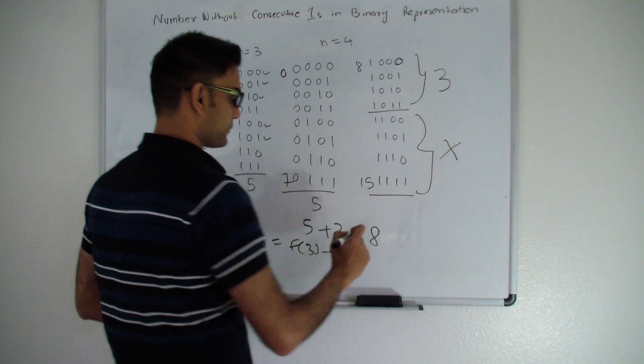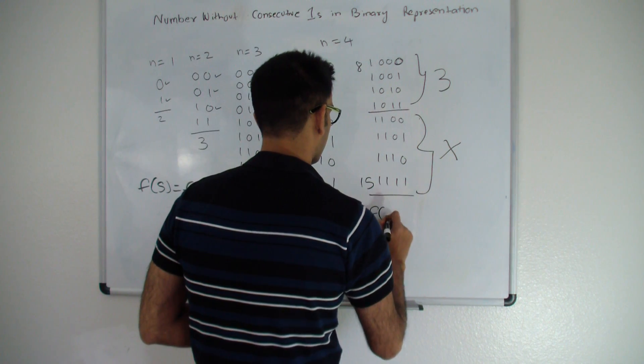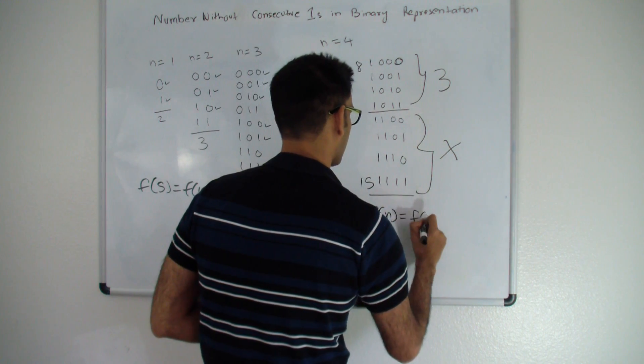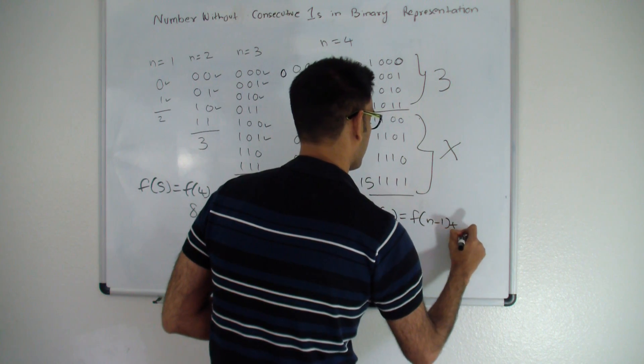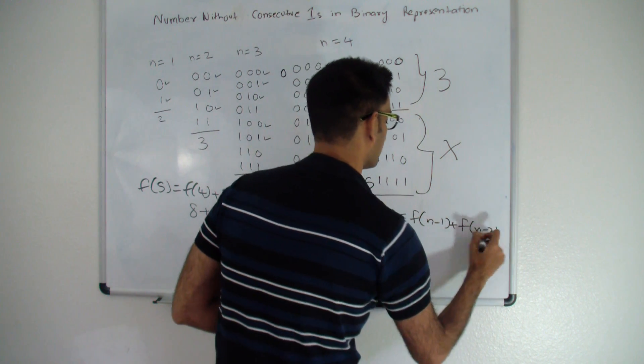The formula for Fibonacci series is pretty straightforward. f of n is equal to f of n-1 plus f of n-2.